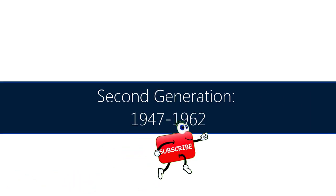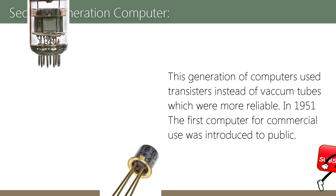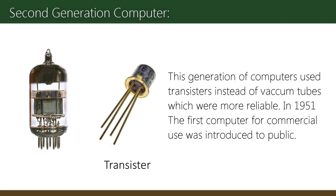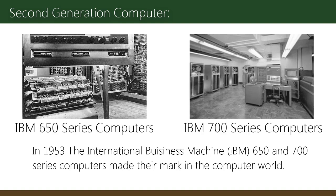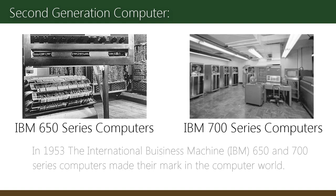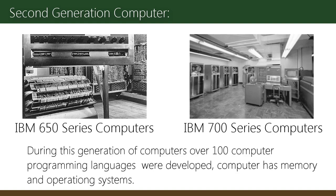The second generation of computers used transistors instead of vacuum tubes, which were more reliable. In 1951, the first computer for commercial use was introduced to the public. In 1953, the International Business Machine IBM 650 and 700 series computers made their mark in the computer world.